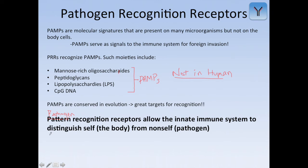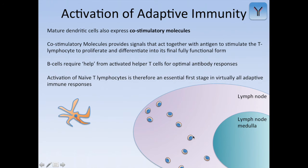Pattern recognition receptors allow the innate immune system to distinguish self from non-self. This is how the innate and adaptive immunity are really linked together. Mature dendritic cells also co-express co-stimulatory molecules that provide signals acting together with antigen to stimulate T lymphocytes to proliferate and differentiate into their fully functional form. B cells also require help from activated helper T cells for optimal antibody responses. Activation of naive T cells is therefore an essential first stage in virtually all adaptive immune responses.